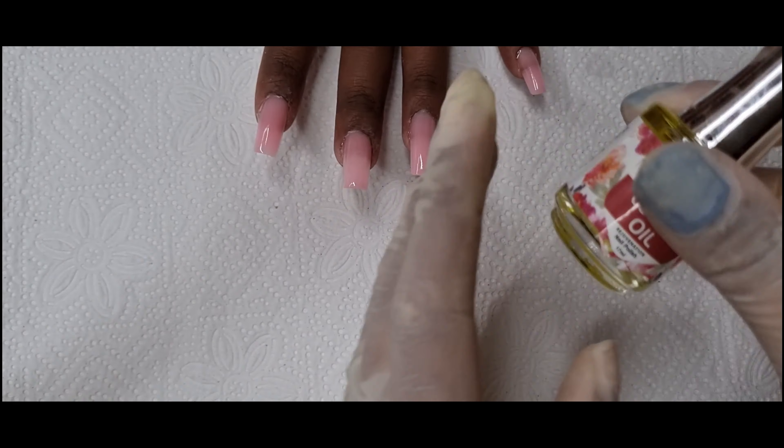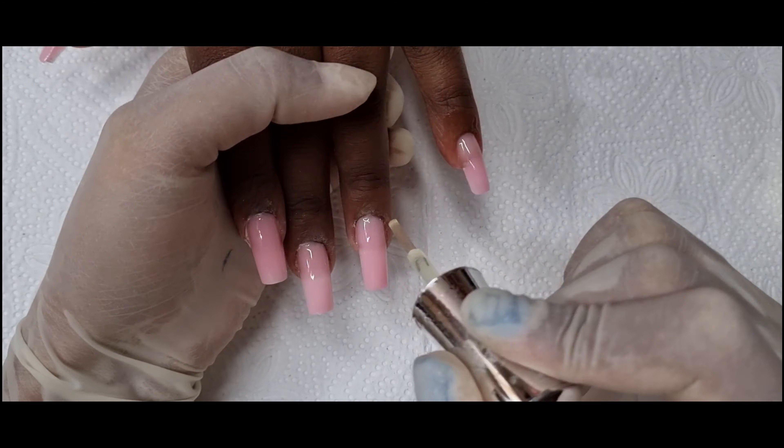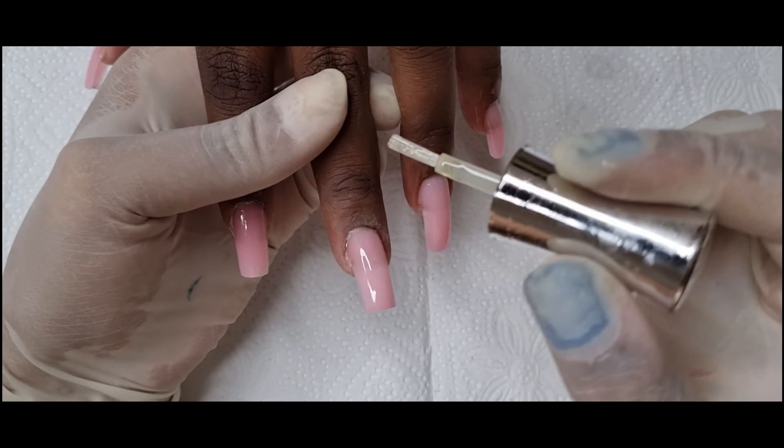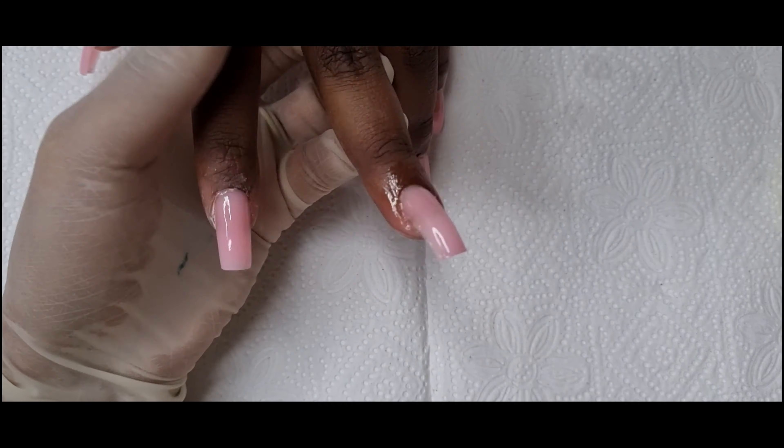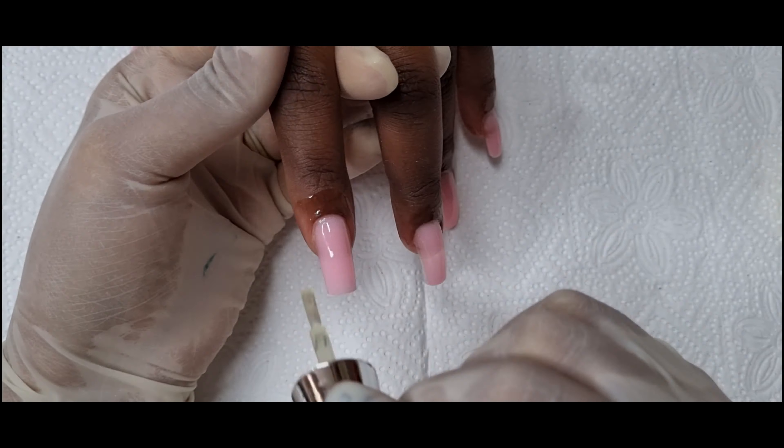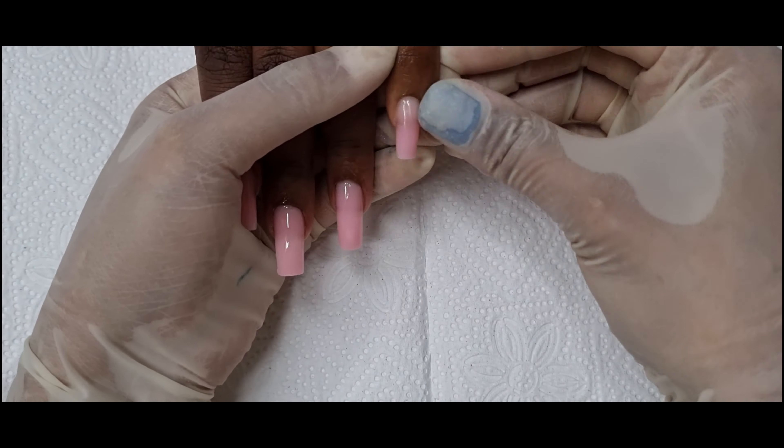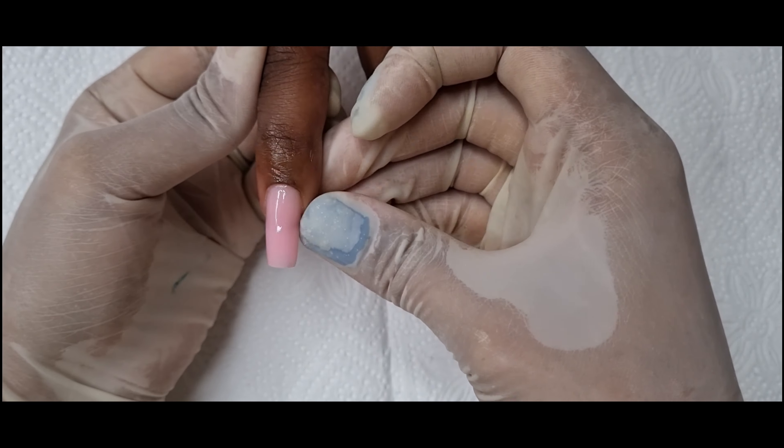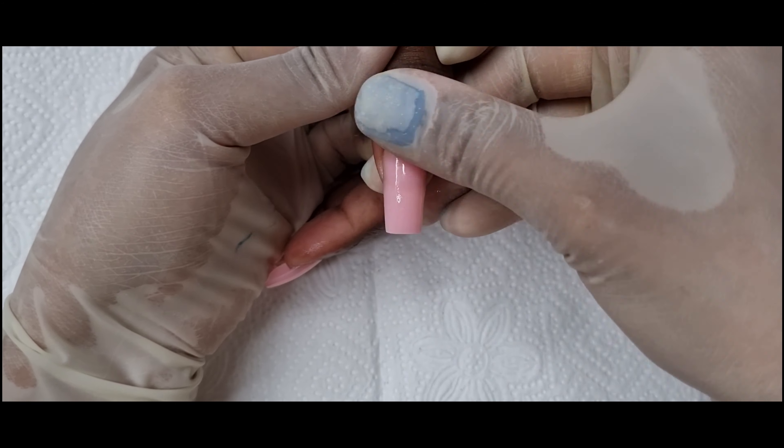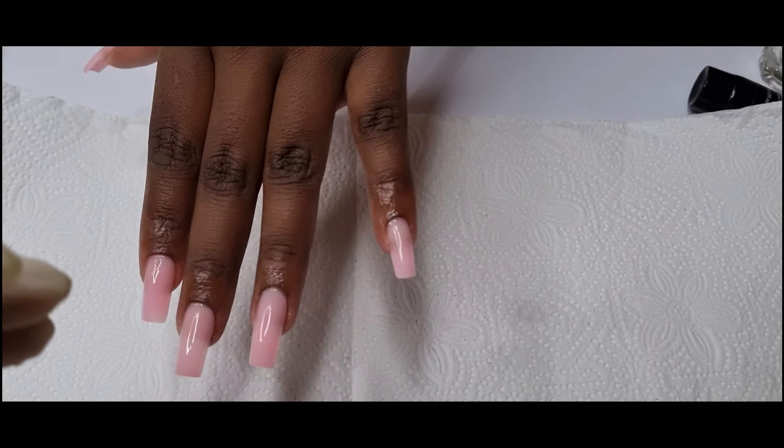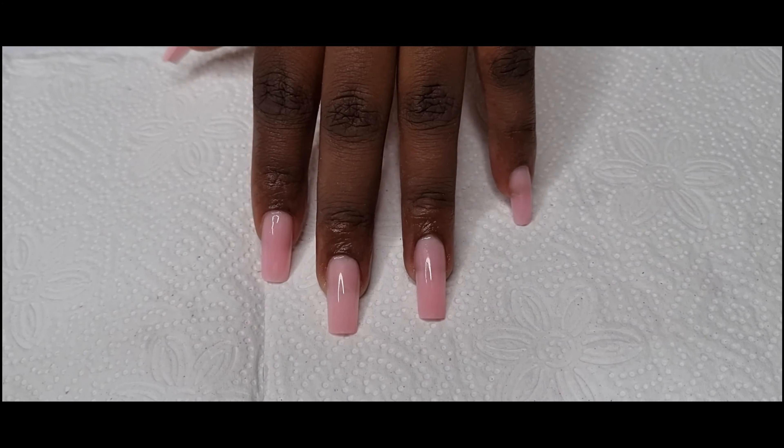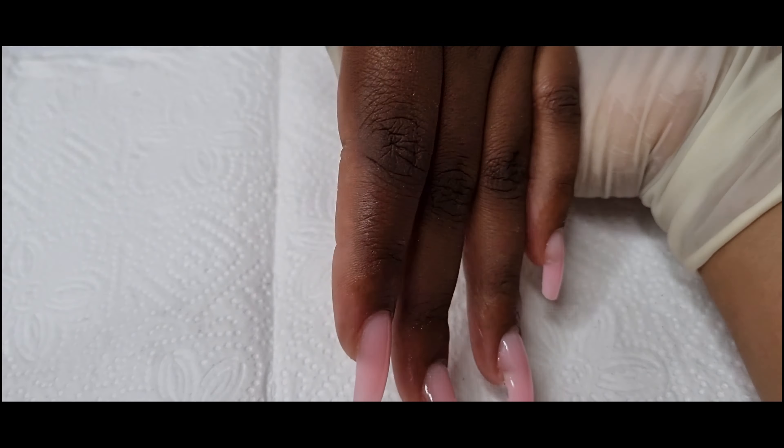Then last step is go in with the cuticle oil and that's it. It's so easy to use this kit and to use poly gel nails. You can obviously do this by yourself. And that's it folks, don't forget to like, subscribe to the channel and I will see you in the next video. Bye bye.